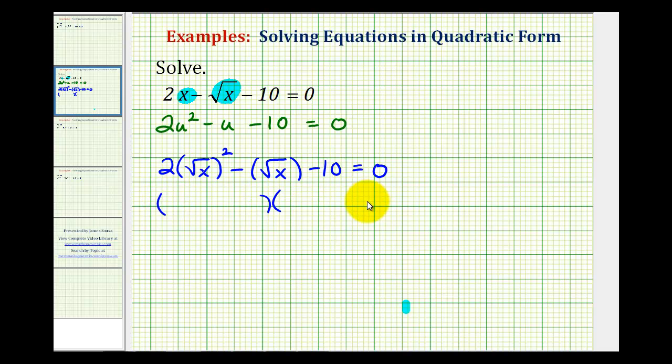So we'll have two binomial factors. Instead of using 2x and x, we'll use 2√x and √x. Now we'll place the factors of negative 10 in here so that the sum of the inner product and outer product will equal -1√x.